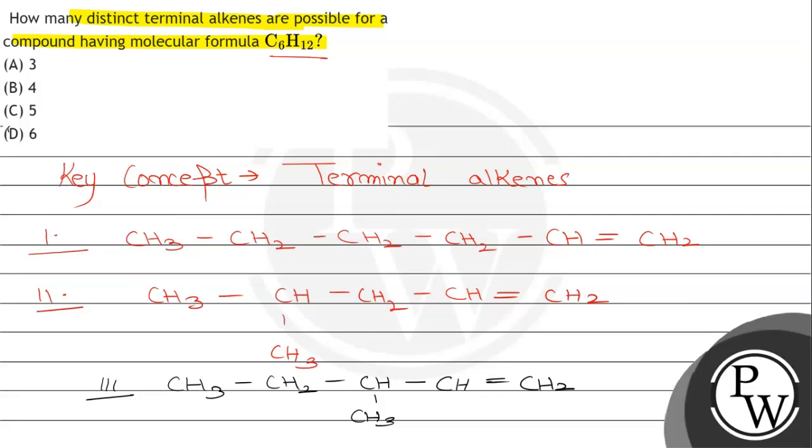So, here are total six distinct terminal alkenes possible. That's my correct answer. I hope you understood the problem well. All the best.